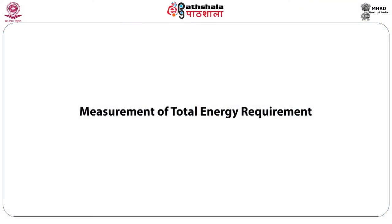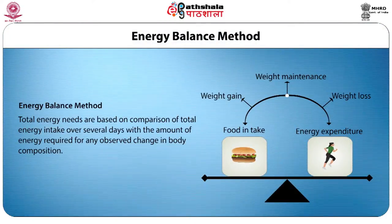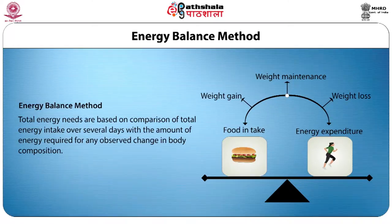The first method of measuring total energy requirement is the energy balance method. The total energy needs are based on comparison of total energy intake over several days with the amount of energy required for any observed change in body composition. If the person is neither gaining nor losing weight, that calorie intake would be the requirement. The accuracy of this procedure obviously depends on the accuracy of food intake records and the accuracy of measurement of change in body composition.